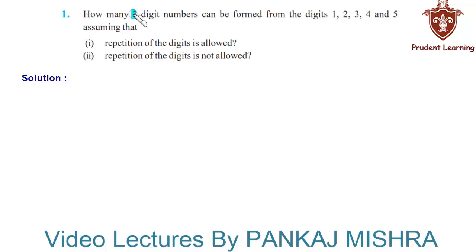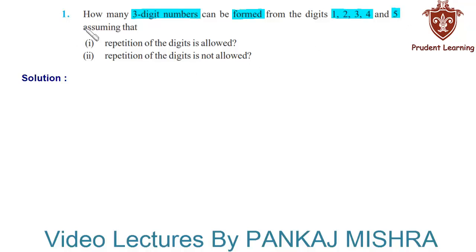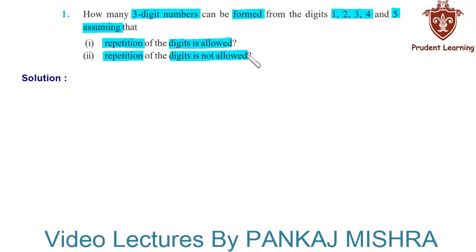How many three-digit numbers can be formed from the digits 1, 2, 3, 4 and 5, assuming that repetition of the digits is allowed and repetition of the digits is not allowed?